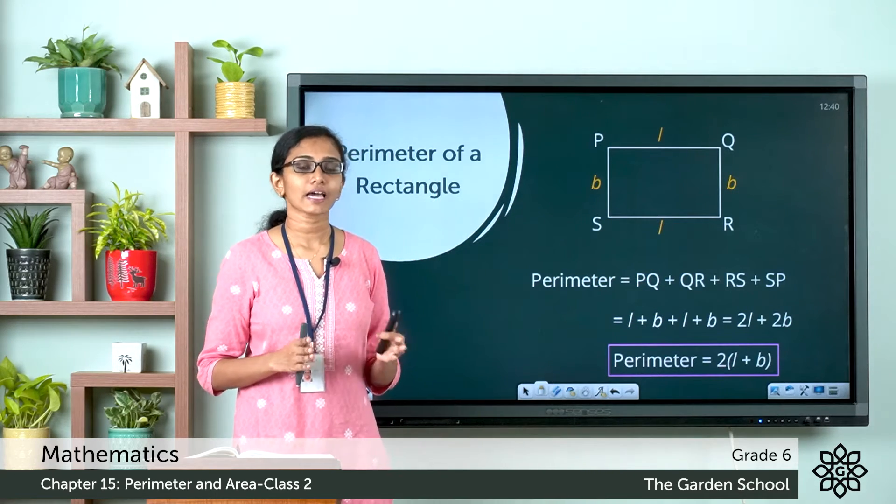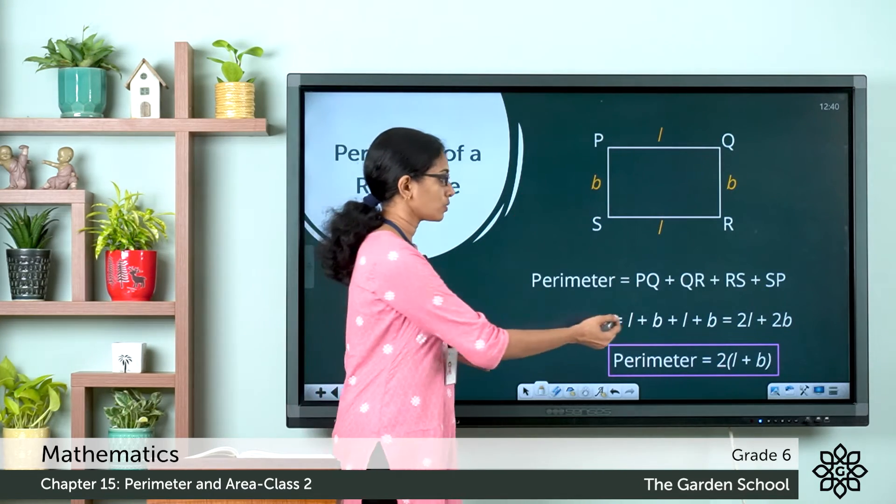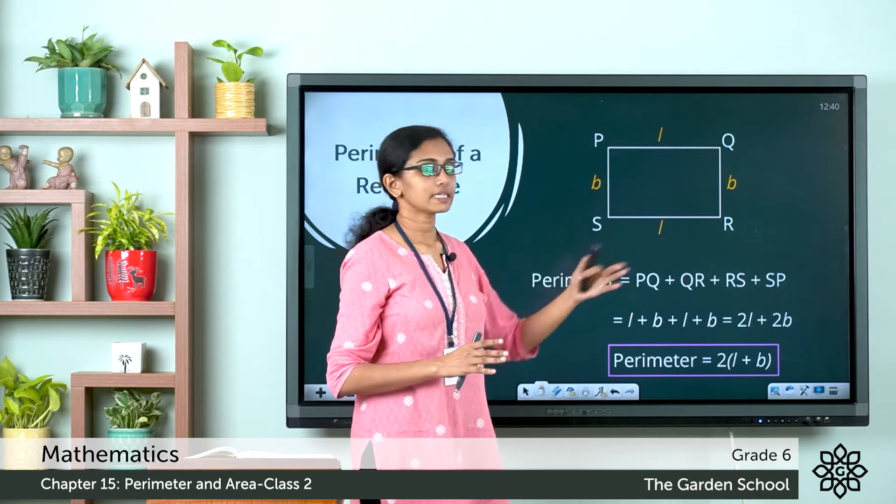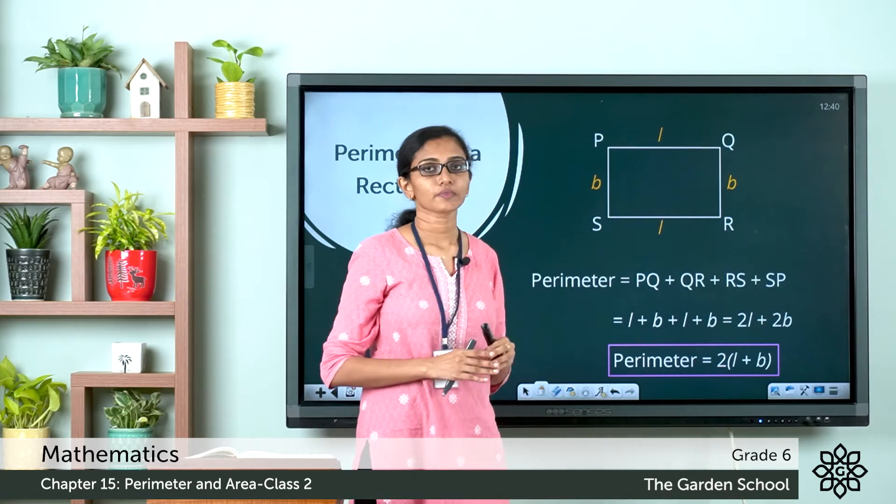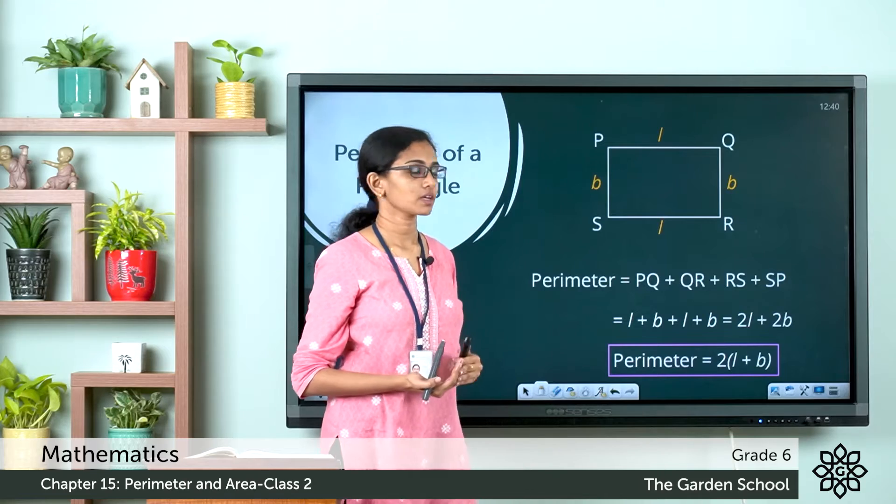Let us substitute the dimensions here. The PQ is equal to the length L, so we are replacing PQ with L. Now QR represents the breadth of the rectangle and it is equal to B here. So instead of QR we are writing B, the breadth.